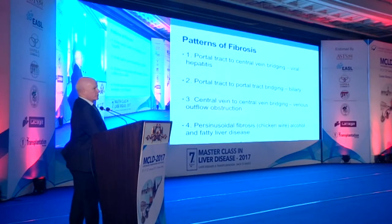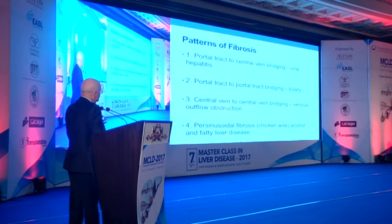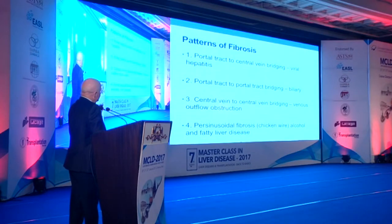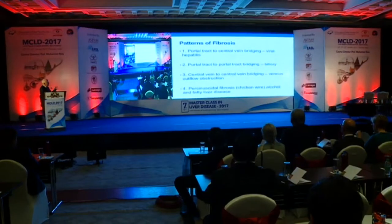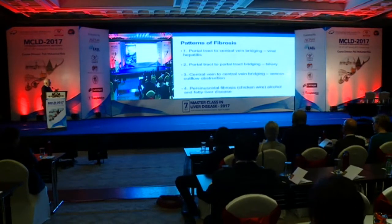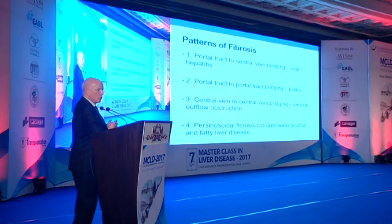There are four patterns of fibrosis. The first links portal tracts to the central vein — predominantly seen in autoimmune or viral hepatitis. The second connects portal tracts to portal tracts — predominantly in biliary disease. The third links central vein to central vein — predominantly venous outflow obstruction. Finally, there is perisinusoidal fibrosis within the parenchyma itself, termed 'chicken wire fibrosis,' which is very characteristic of alcohol and non-alcoholic fatty liver disease.